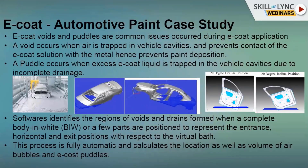Now moving to the automotive case study, which is a very interesting topic. E-coat voids and puddles are common issues that occur during e-coat application. When the vehicle enters into the tank, air bubbles form in vehicle cavities, creating voids during e-coat application. The second issue is puddles or drainage. This case study is based on voids and puddles - we analyze these to avoid corrosion so that future problems are minimized.